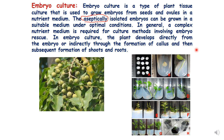A complex nutrient medium is generally required for culture methods involving embryo rescue. In embryo culture, the plant develops directly from the embryo or indirectly through the formation of callus and then subsequent formation of shoots and roots. As discussed in the first lecture of the plant tissue culture series, the explant can directly give rise to a new plant or develop via embryogenesis — the same applies here.